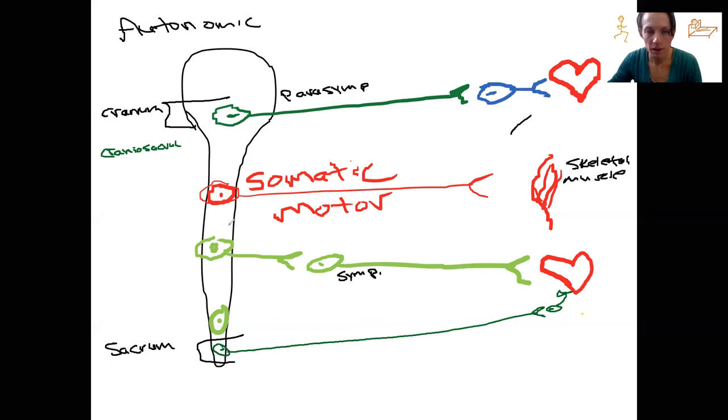The sympathetic nervous system is sometimes called the thoracolumbar, because it extends from the thoracic region down to the lumbar region.